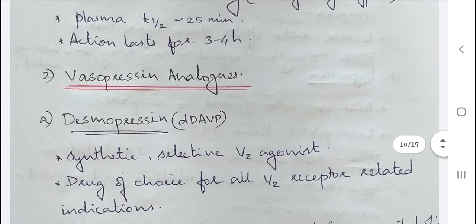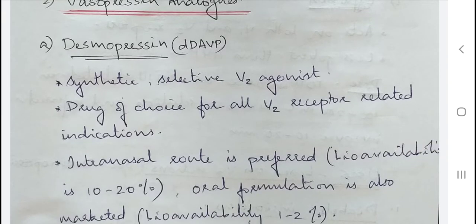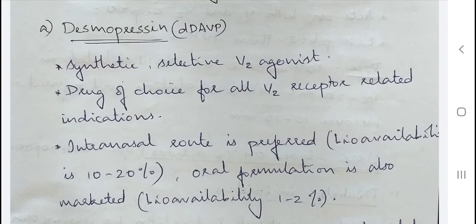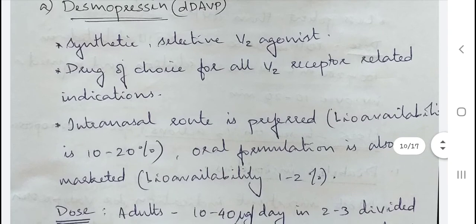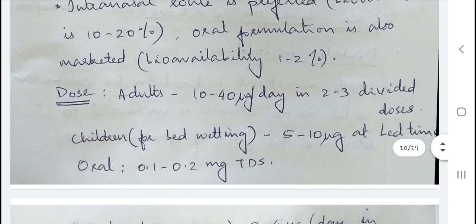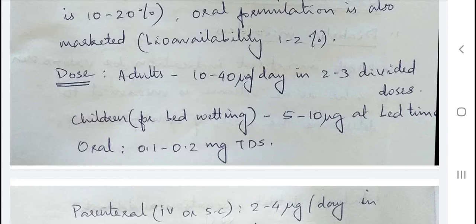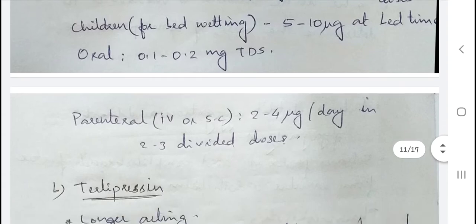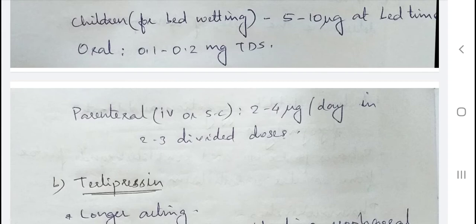Desmopressin is the important synthetic analog of vasopressin and is a selective V2 agonist, making it the drug of choice for all V2 receptor-related indications. The intranasal route is preferred, with bioavailability of 10–20%. Oral bioavailability is only 1–2%. Adult dosage intranasally is 10–40 micrograms per day in 2–3 divided doses; for bed-wetting in children, 5–10 micrograms at bedtime; orally, 0.1–0.2 mg thrice daily; and parenterally (IV or subcutaneous), 2–4 micrograms per day in 2–3 divided doses.